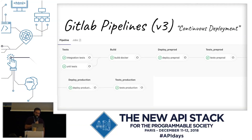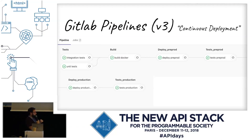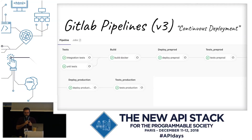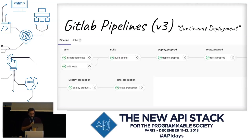Version 3 of our GitLab pipeline moves to continuous deployment. The first parts are the same — tests and building the Docker image pushed to the registry. Then we automatically deploy to the preproduction environment. This is only for the master branch; we don't do continuous deployment on every branch for production. When any commit is merged into master, we deploy to preproduction, run tests including read-only and write features to verify the service works, and if they pass, we deploy to production automatically — no manual action. Then we test read-only features on production.